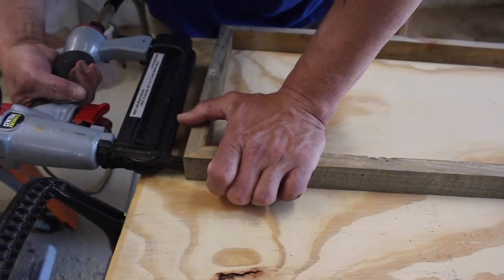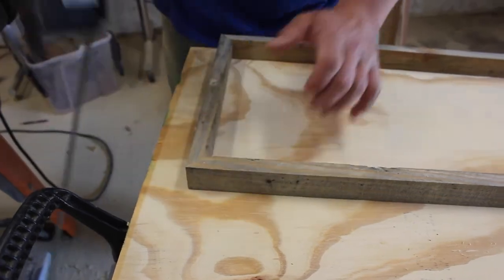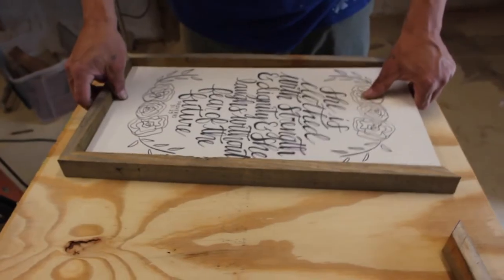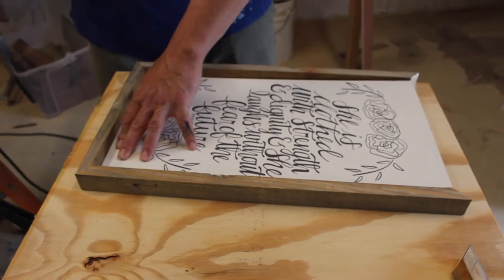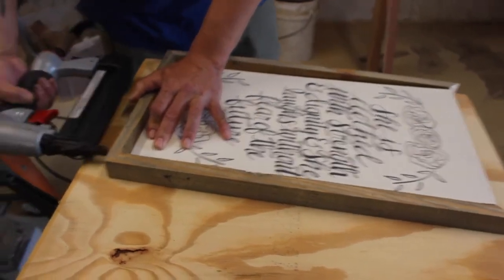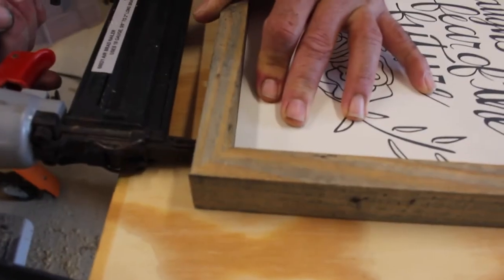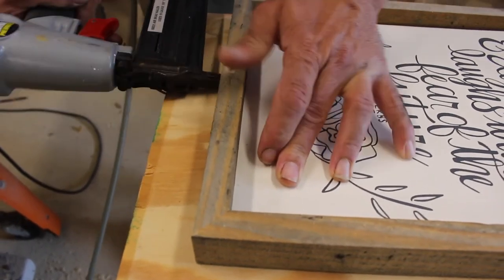If you have any overlap, it can be sanded flush with a palm sander, so don't worry too much about that part. It can be fixed with a sander, and I've actually had that happen to me quite a few times.